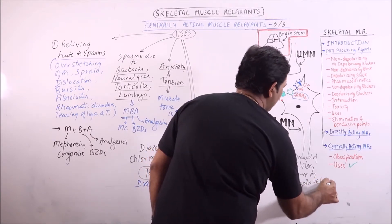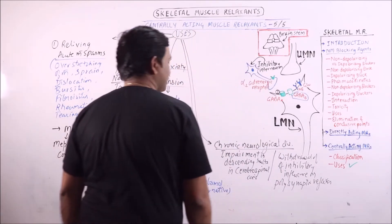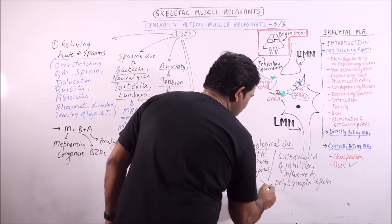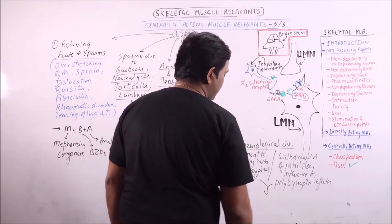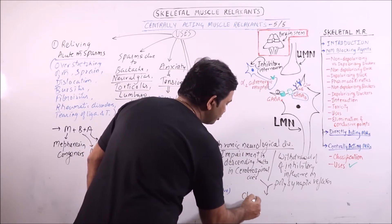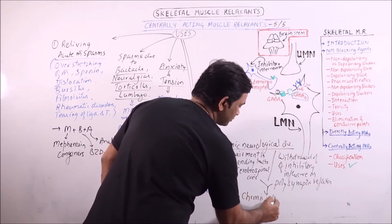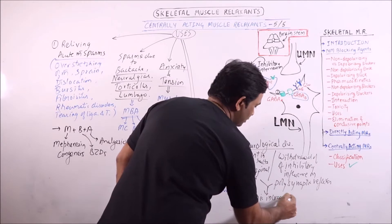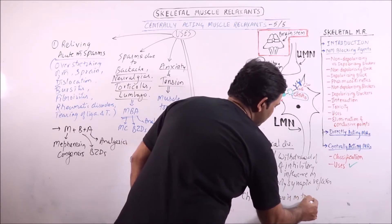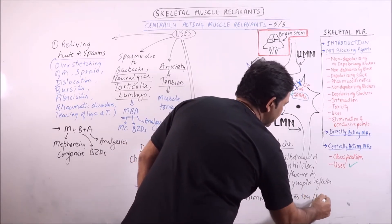on polysynaptic reflexes. If any of this condition will occur, then it may lead to chronic increase in muscle tone or spasticity.